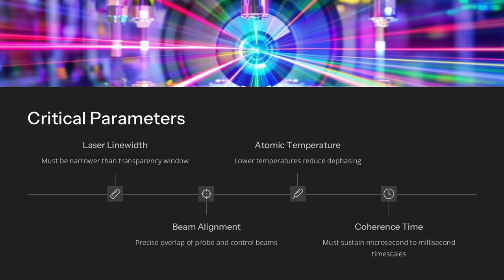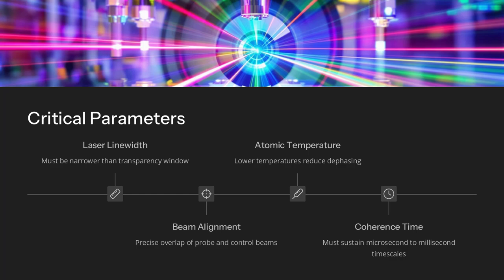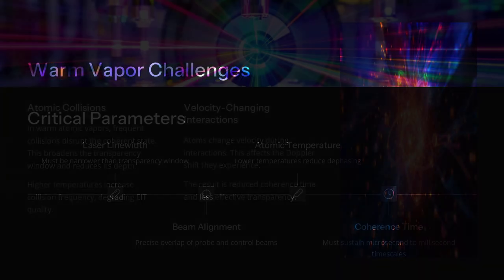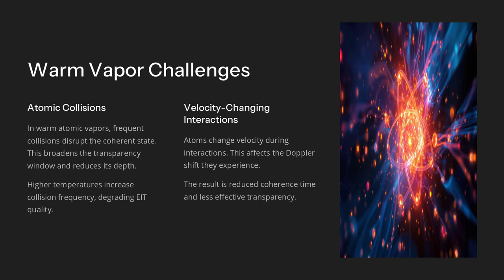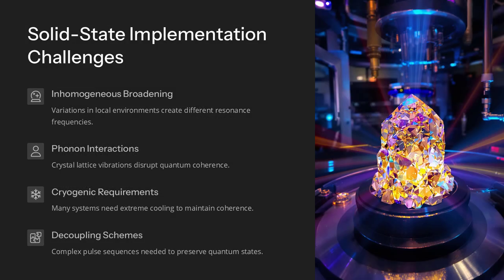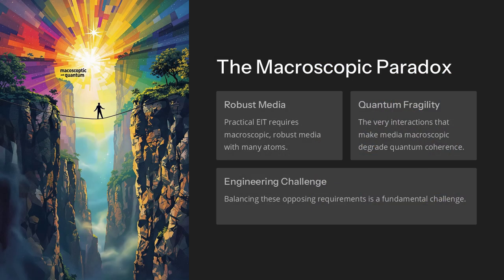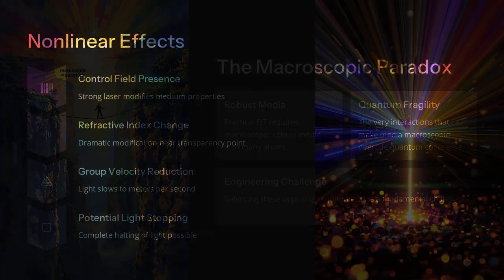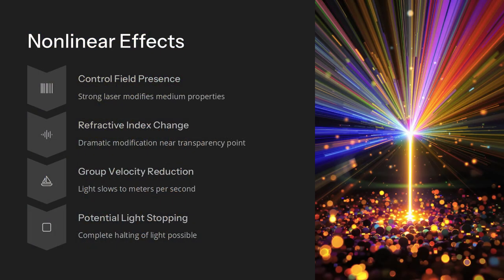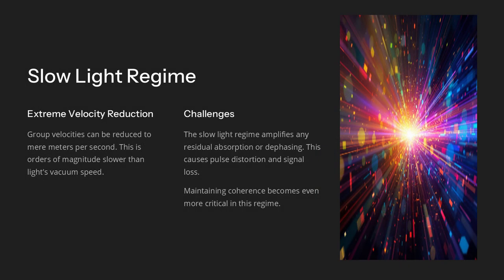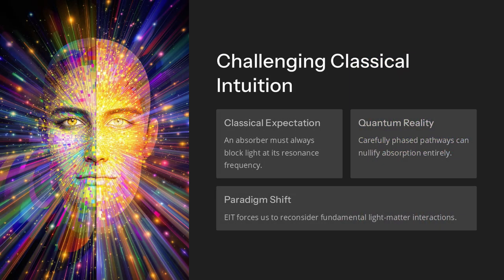So far, so good — until we examine what makes this interference possible in the first place. The EIT phenomenon arises in a three-level lambda or ladder configuration where a weak probe laser addresses one transition, and a strong control laser couples the excited state to a third level. Under the right detuning and intensity conditions, the two excitation amplitudes cancel each other out, producing a long-lived dark state in which atoms remain unexcited and no photons are absorbed. The result is a narrow spectral region through which the probe beam passes unimpeded, even though the medium remains highly absorptive just outside this window.